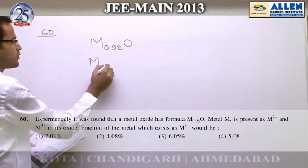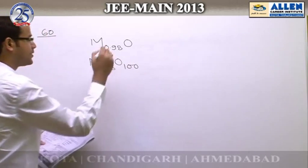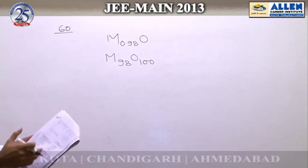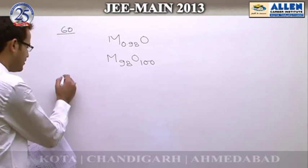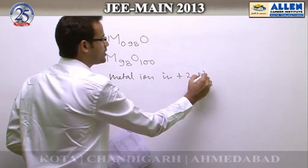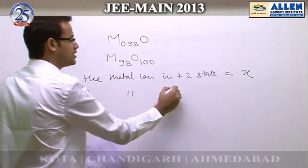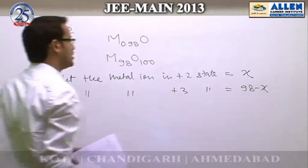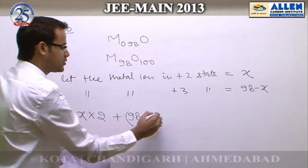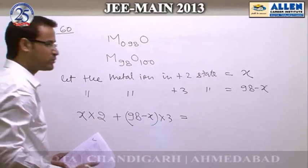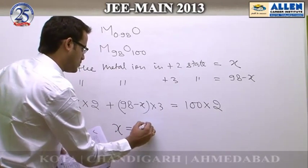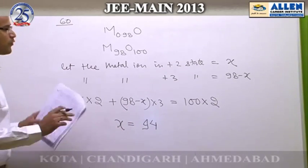Question number 60: A non-stoichiometric compound has the formula M₀.₉₈O. We can write this as M₉₈O₁₀₀. Some metal ions are in the +2 oxidation state and some are in the +3 oxidation state, but the total charge on metal ions must equal the total charge on oxygen. Let the metal ions in the +2 state be x; then those in the +3 state are (98 − x). Total charge on metal ions: 2x + 3(98 − x) = 100 × 2. Solving gives x = 94.